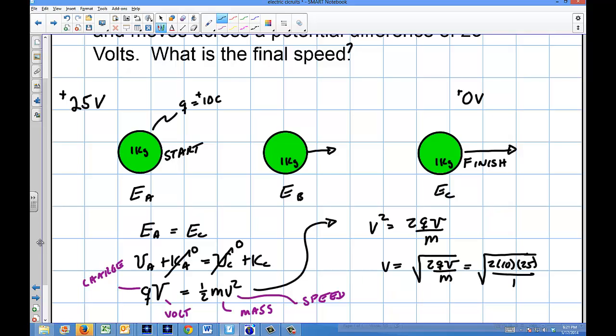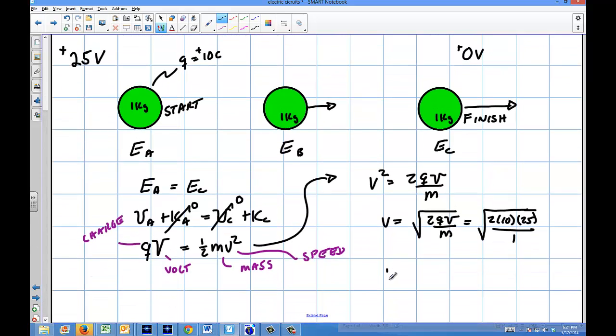So I'm going to end up with the final speed of this object is going to be the square root of 500 meters per second. So that's going to give us a little bit over 20, so it's going to give us about 22.36 meters per second.